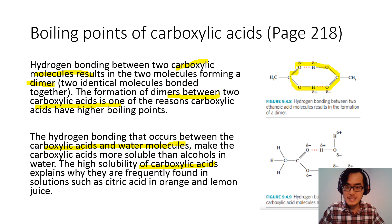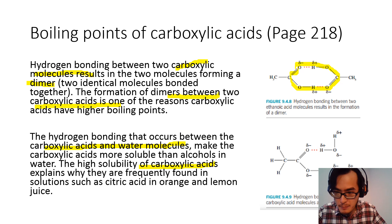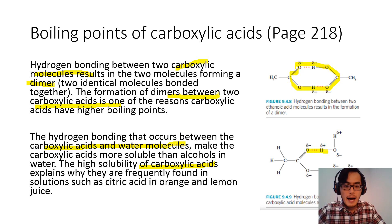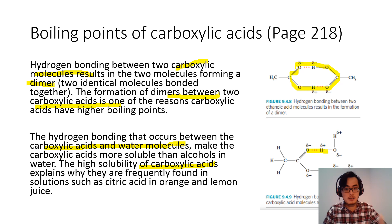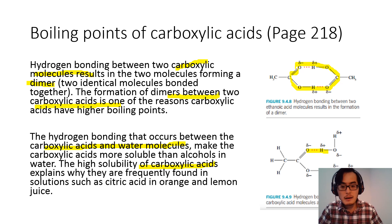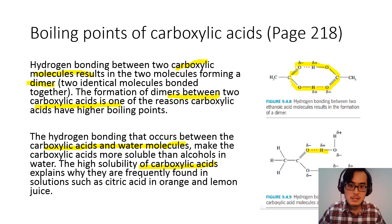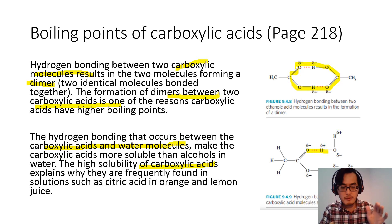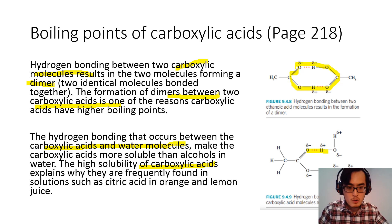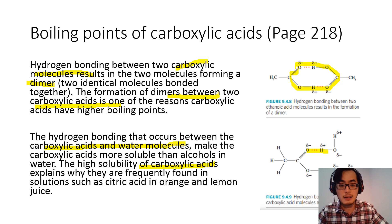Carboxylic acids can form two hydrogen bonds with another carboxylic acid molecule, forming a dimer structure. They are also soluble in water because they are polar. Bear in mind, both alcohol and carboxylic acid are polar and soluble in water. However, for alcohol, as the number of carbons increases, solubility decreases because carbons are generally non-polar.